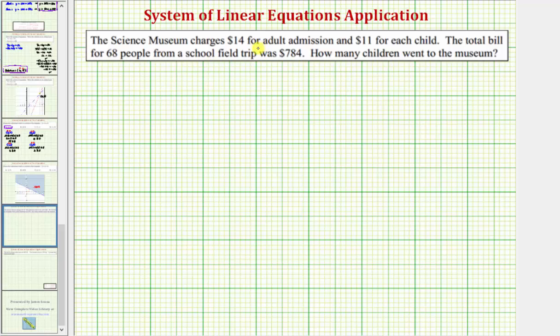The Science Museum charges $14 for adult admission and $11 for each child. The total bill for 68 people from a school field trip was $784. How many children went to the museum?